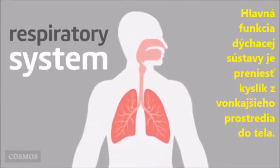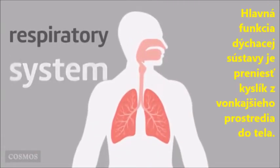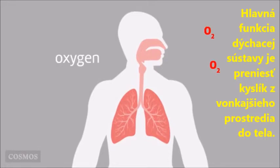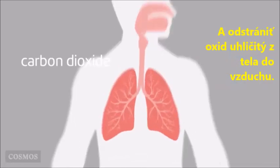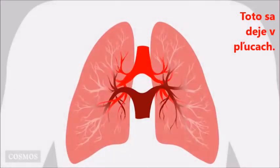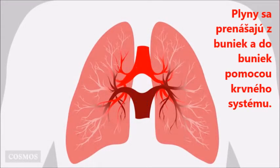The main function of the respiratory system is to provide the oxygen from the air and remove the carbon dioxide into the air. This takes place in the lungs, with the gases carried to and from the cells by the bloodstream.